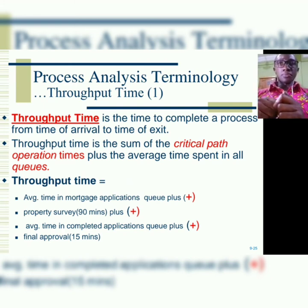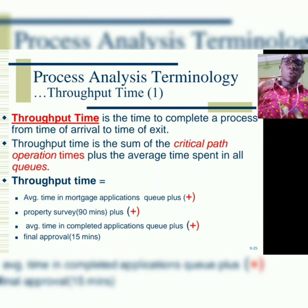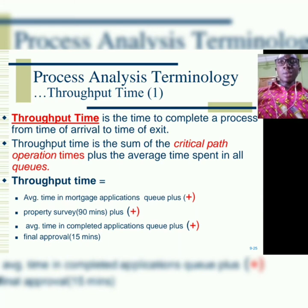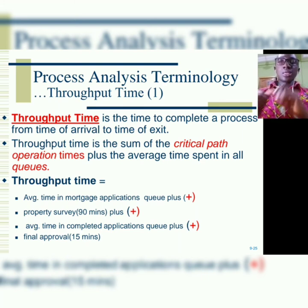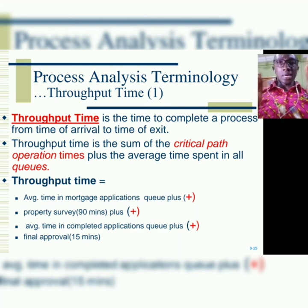Now let's talk about throughput time. The throughput time is the time to complete a process from the time of arrival to the time of exit — from when you start through the system until you finish. It is the sum of the critical path operation times plus the average time spent in all queues. The critical path is the longest path within any operation — the activity or operation with the longest cycle time. Go back to our diagram and try to identify the critical path.